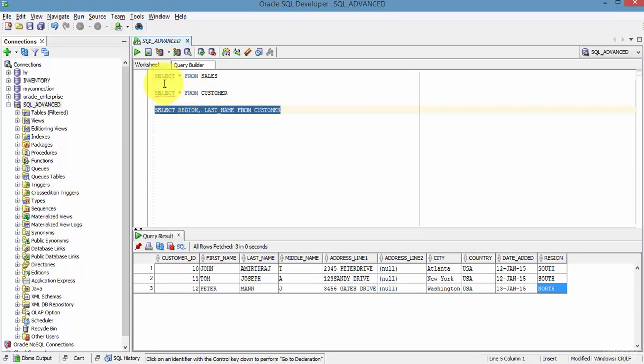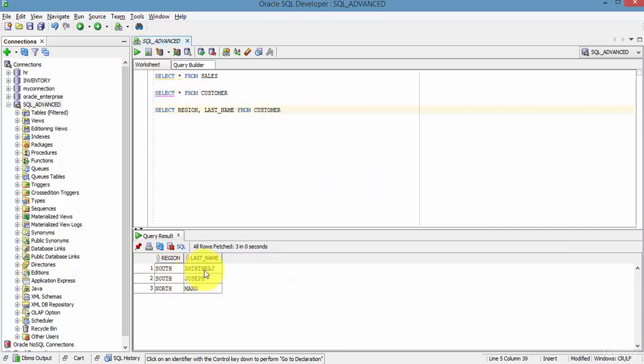So now let's run this. We have two customers for region South and one customer for region North.